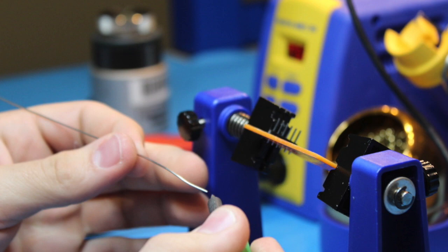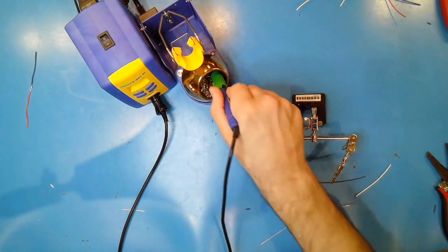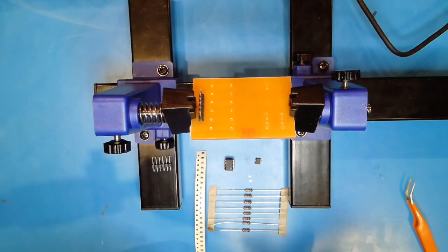If you notice the shininess of the tip begins to fade, insert it firmly into the brass wool and twist a few times until it's clean. Then retin the tip.